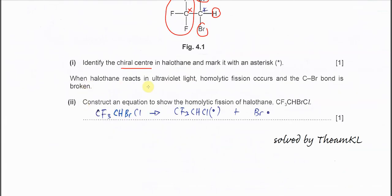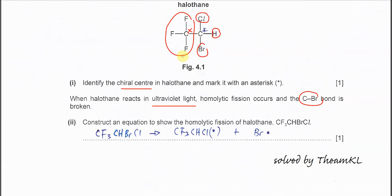Part two: When halothane reacts with UV light, homolytic fission occurs and the C-Br bond is broken. We know that the weakest bond is the C-Br bond, so this bond will break.